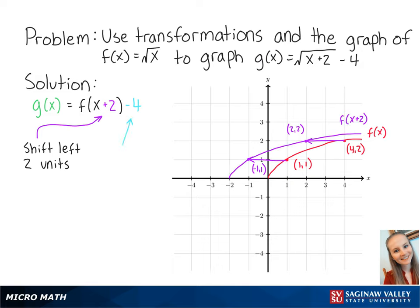Subtracting 4 from the function means that we will shift our new graph down by 4 units. So our new points are at negative 1, negative 3, and 2, negative 2. Connecting the points, we get the graph of g of x, and this is the final answer.